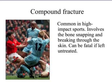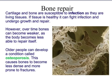Some people, as they get older, develop osteoporosis, or soft bones, and they are most susceptible to fractures. So the bones have to repair themselves. Cartilage and bone are susceptible to infection as they are living tissues. If a tissue is healthy, it can fight infection and undergo growth and repair. However, over time bones can become weaker as the body becomes less able to repair itself. Osteoporosis causes bones to become less dense and more prone to fractures, and it generally affects more women than men due to hormonal imbalance during menopause.